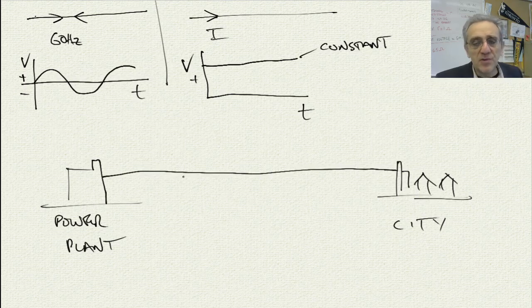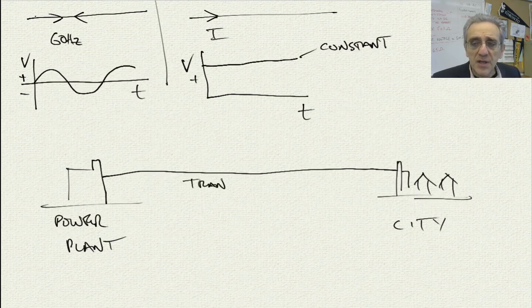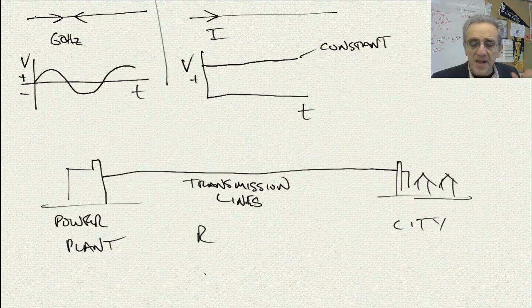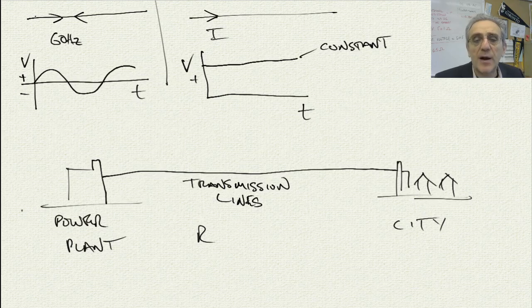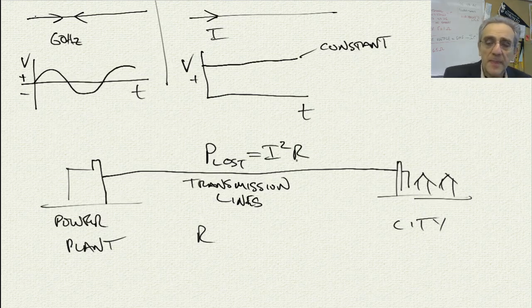And these transmission lines are in fact made of copper wire, a conductor. But even though they are still a conductor, these transmission lines still have some resistance. Now that means that we have power lost in actually transferring the electrical power from the power plant to the city. And that power lost is equal to I squared R.